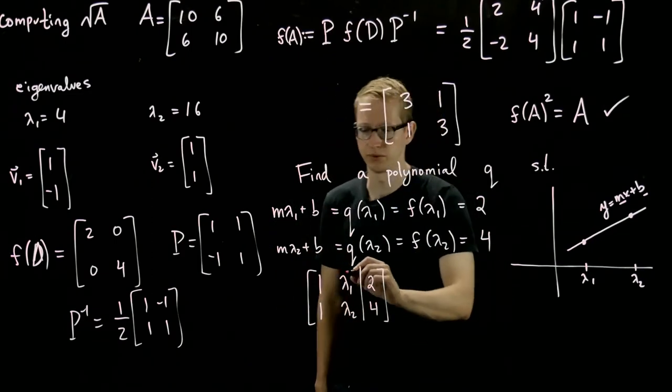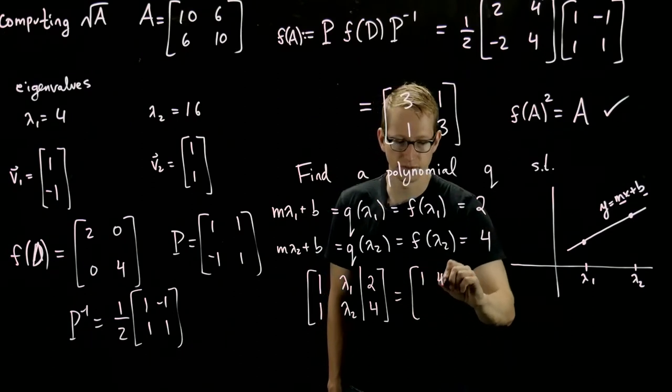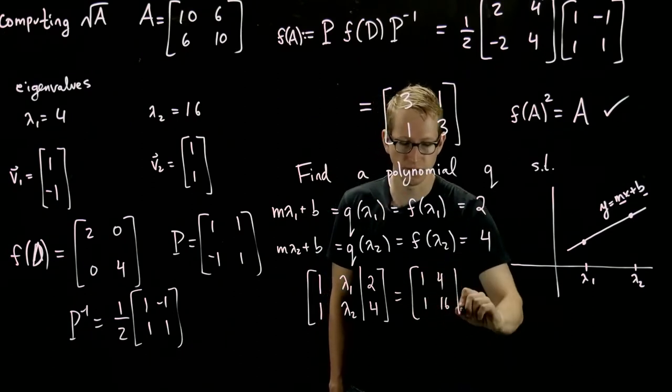And we know what lambda 1 and lambda 2 are. They are 4 and 16. So really this is equal to 1, 4, 1, 16, 2, 4.